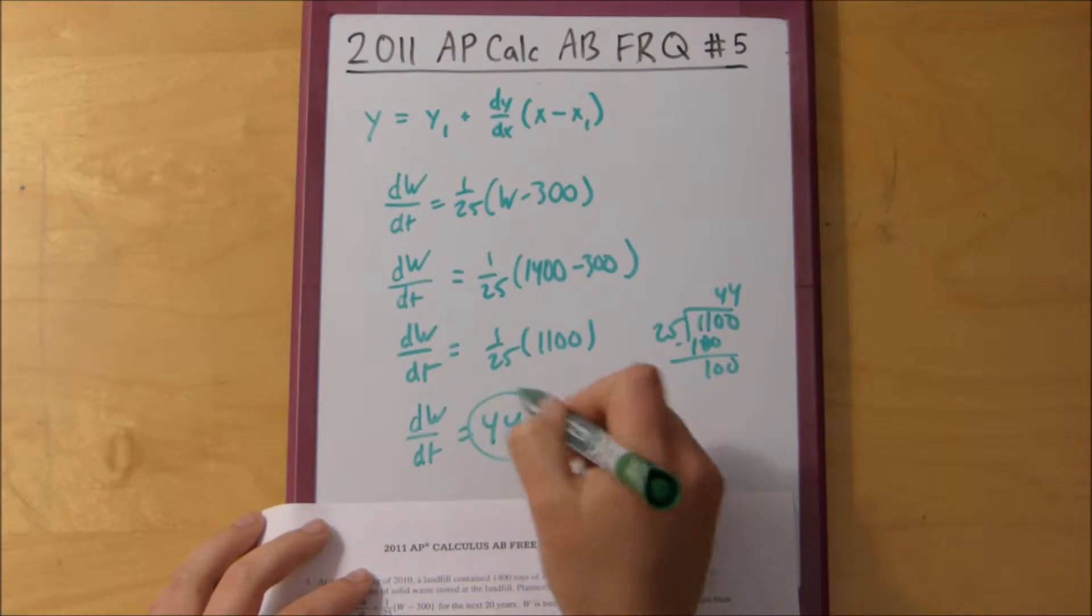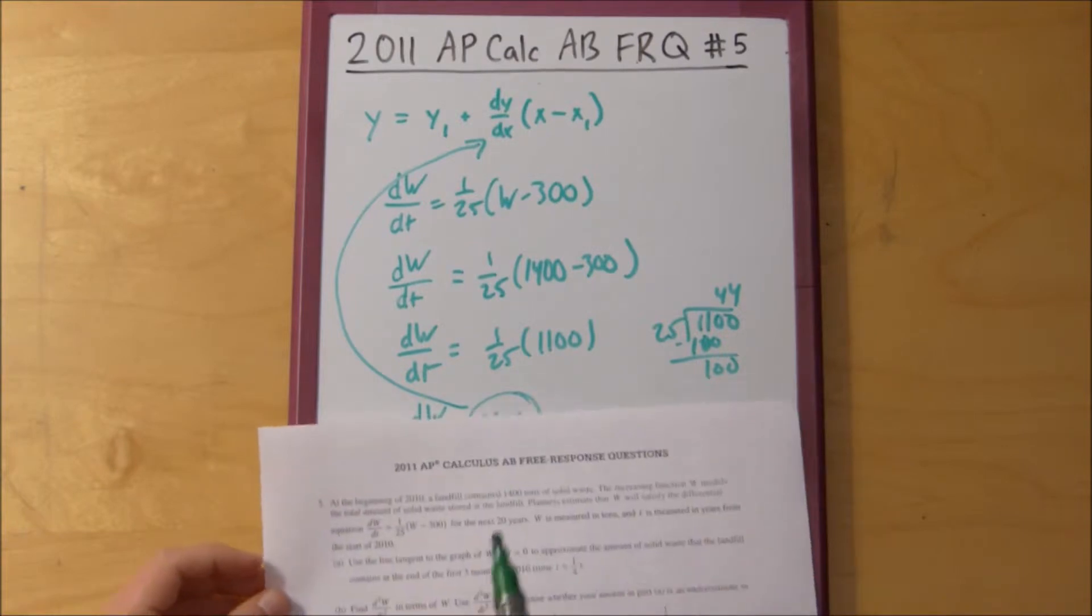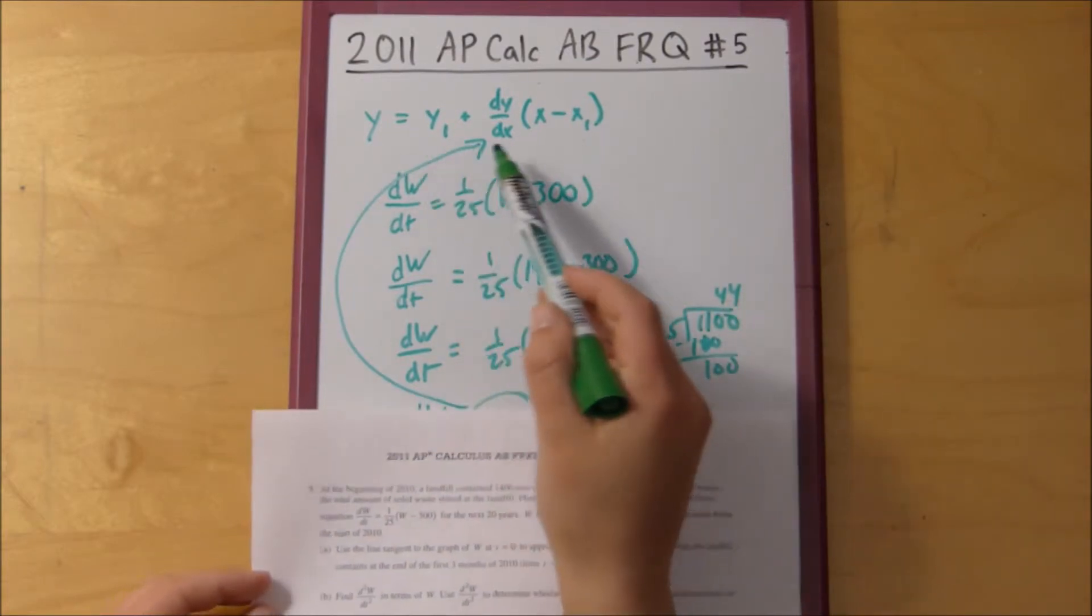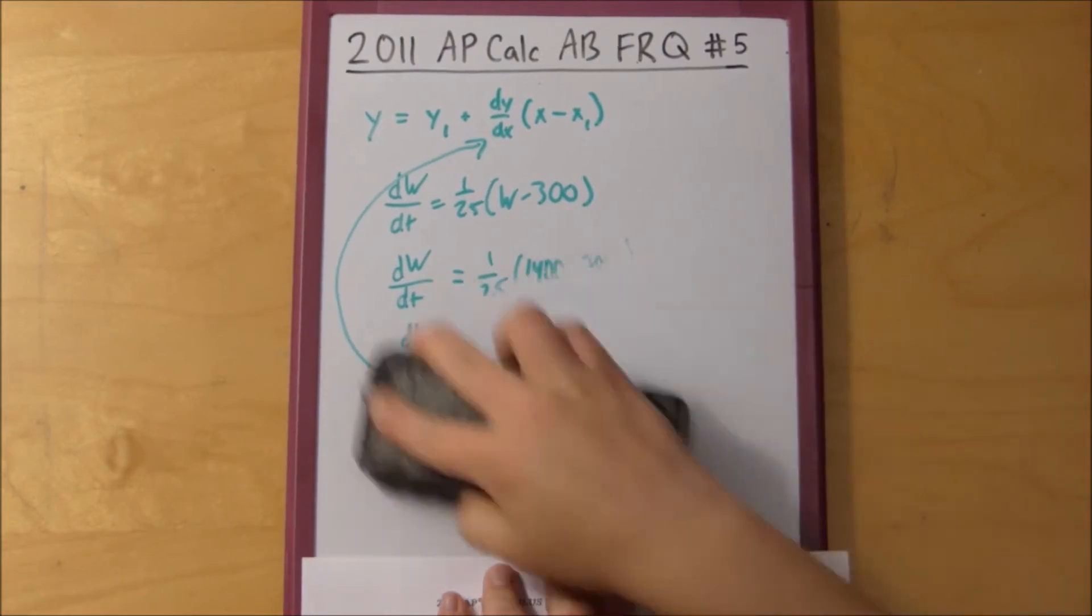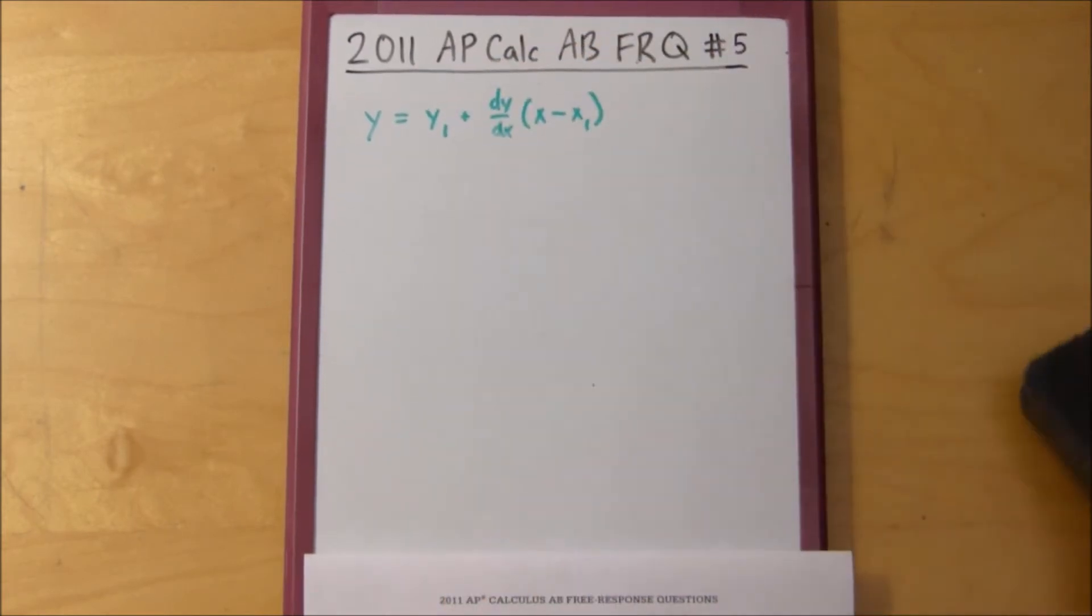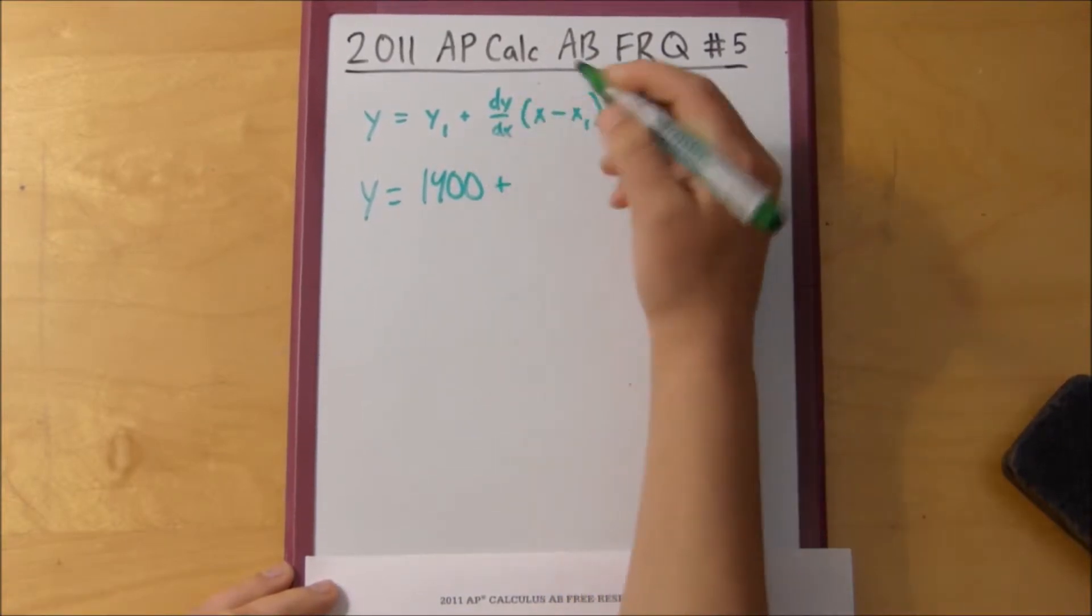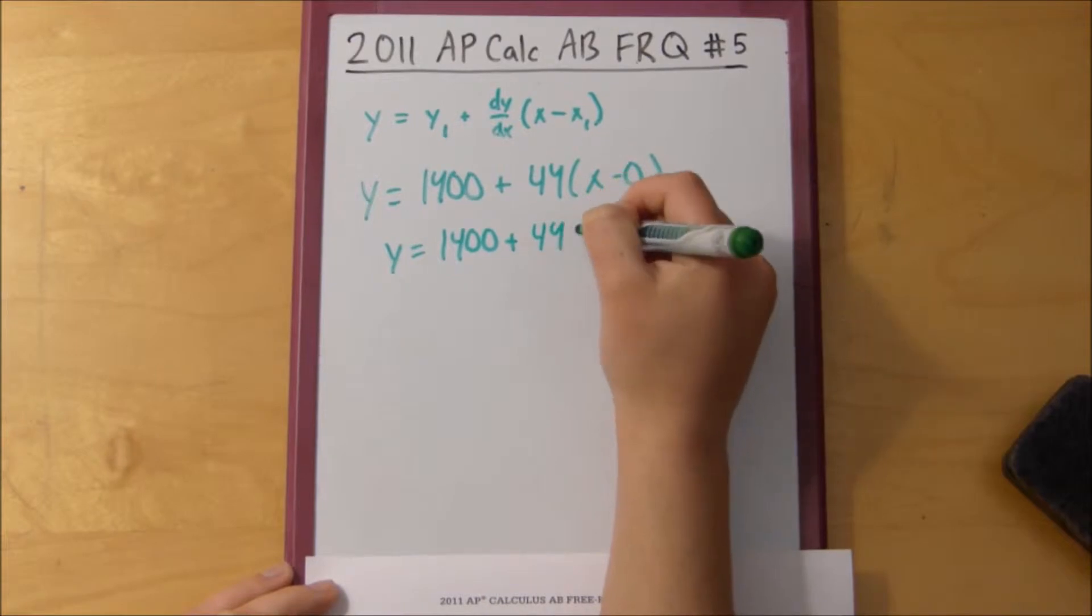So we can take this value and we can plug it into dy over dx. And then since we have y1, 1400, and we have x1, zero, then that means that we can just plug all those things in and we can get our tangent line. So y equals 1400 plus dy over dx, we said it was 44, and x minus zero, so this simplifies to be 1400 plus 44x.